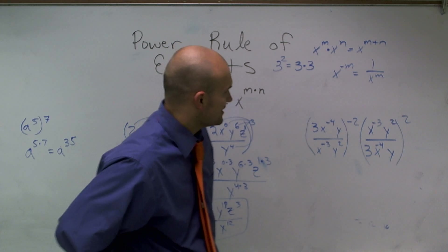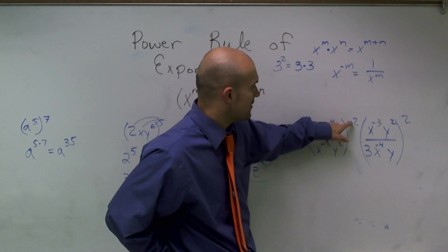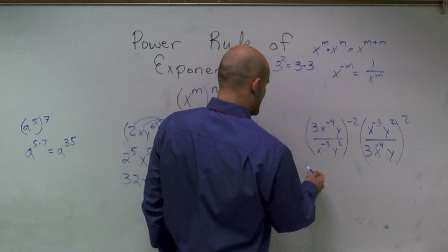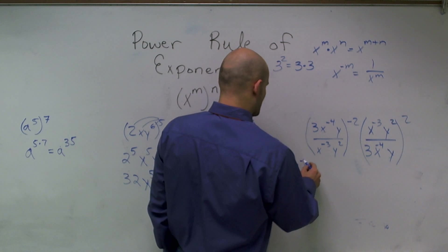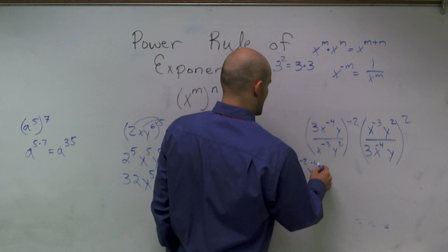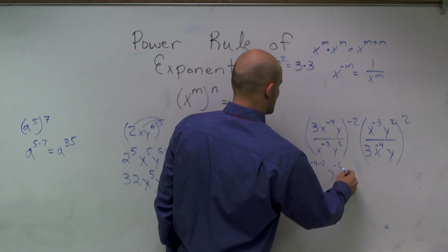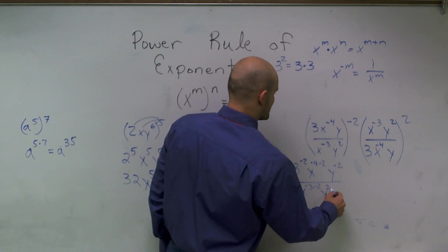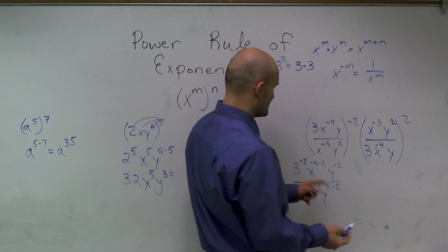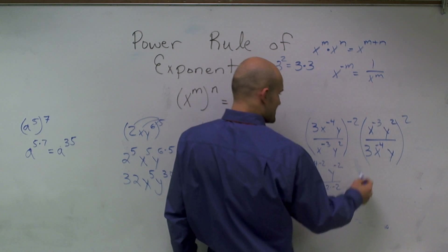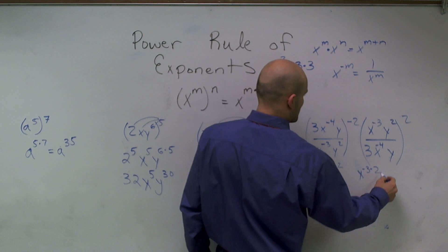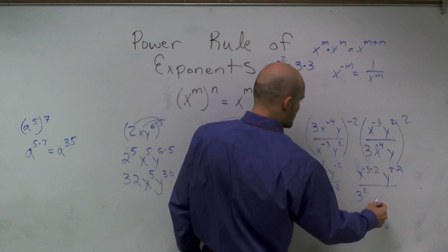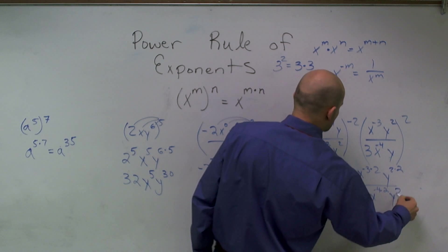So now, what happens is I just took the reciprocal of this, so now instead of a negative exponent, it's to the positive exponent. I'm still going to get the exact same answer, but if you'll notice, when I distribute, I have 3 to the negative 2nd, x to the negative 4 times negative 2, y to the negative 2nd, all over x to the negative 3 times negative 2, and y to the 2 times negative 2. Here, I'm doing the exact same thing, 2 times negative 3, y to the 2 times 2, all over 3 squared, x to the negative 4 times 2, and y to the 2nd.